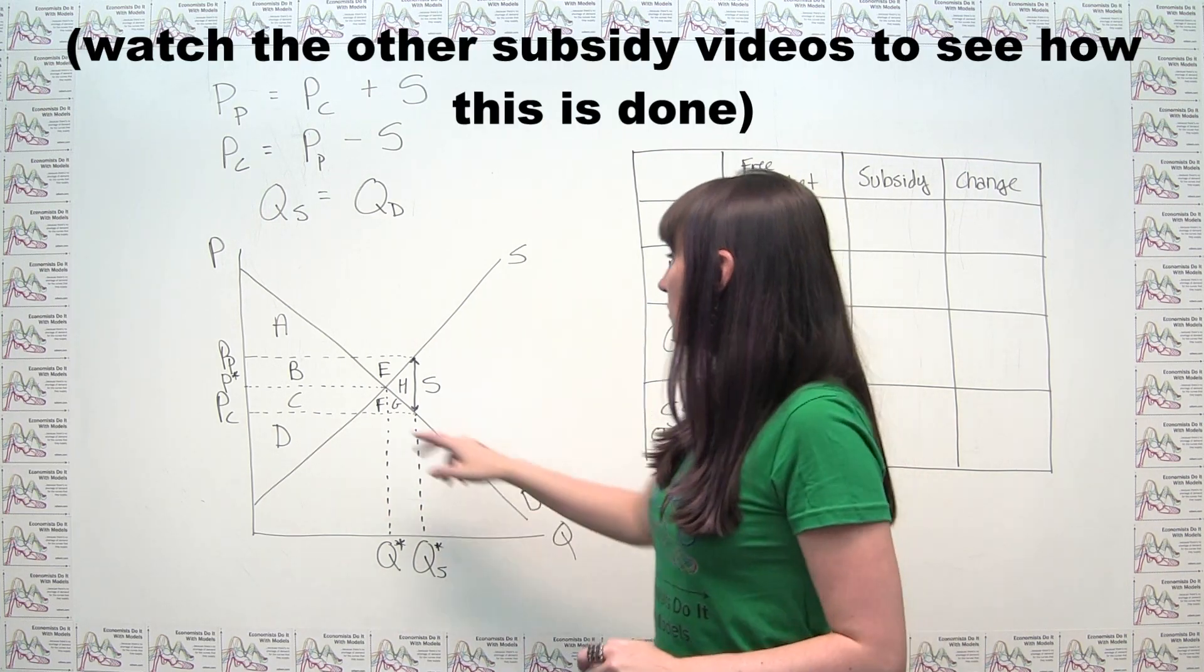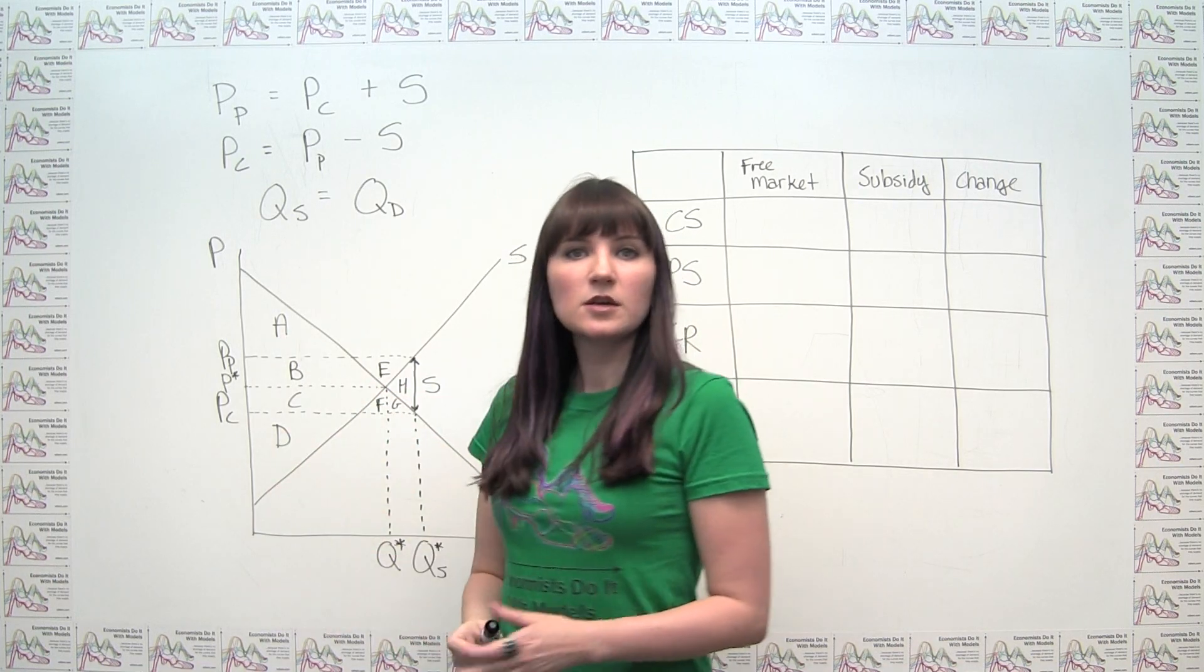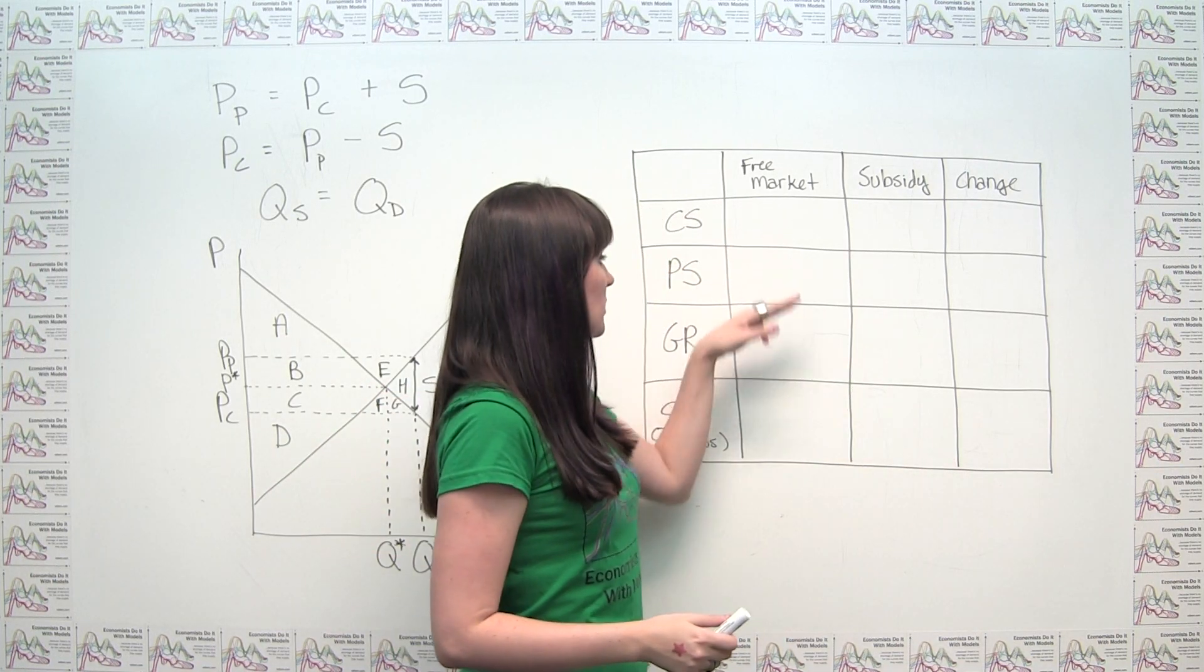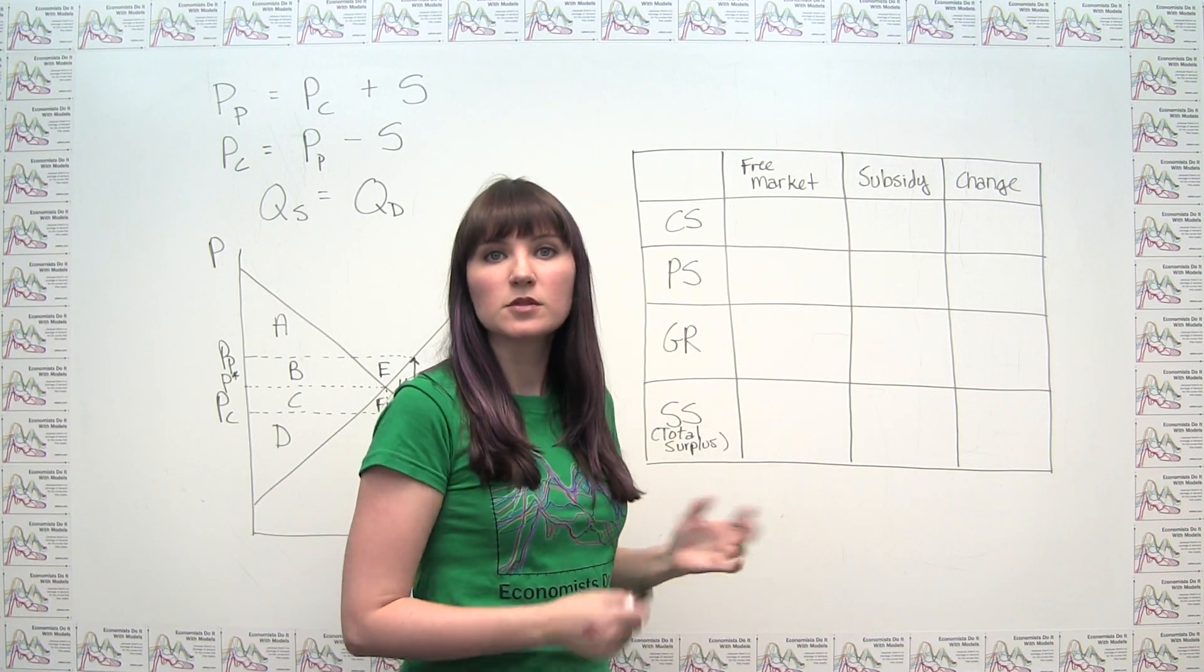I also went through and labeled the relevant areas that we'd be working with with these letters, so we could refer to them when drawing our welfare table and looking at consumer surplus, producer surplus, and so on and so forth.